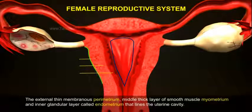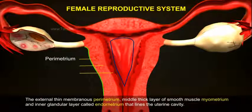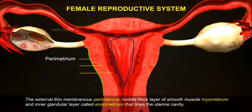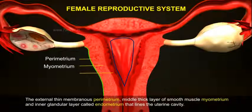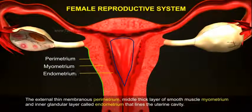The three layers are: the external thin membranous perimetrium, the middle thick layer of smooth muscle called myometrium, and an inner glandular layer called endometrium that lines the uterine cavity.